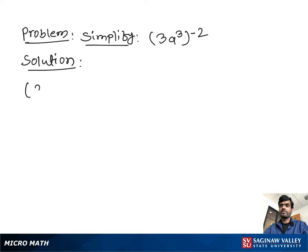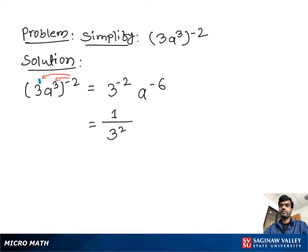Simplify (3a³)⁻². First, we multiply exponents using the power rule to get 3⁻² times a⁻⁶. To make the power of 3 positive, we move it to the bottom, writing 1 over 3². To make the power of a positive, we write 1 over a⁶.